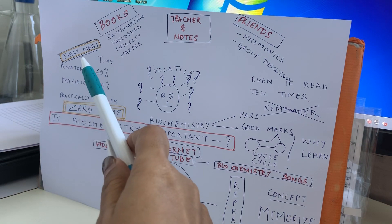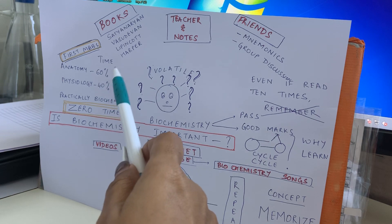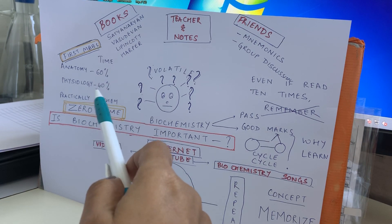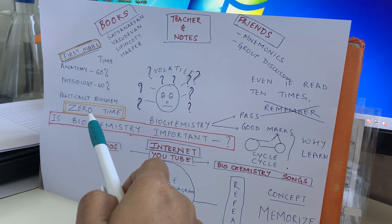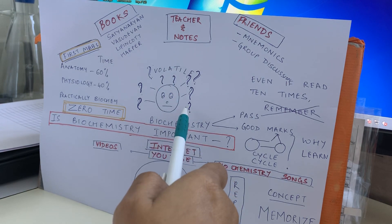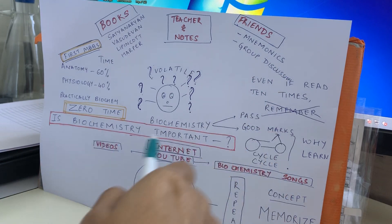It is a volatile subject, you have to keep on reading it. But the point is that in first MBBS, anatomy will take most of the time - 60% of the time goes into studying anatomy, the rest 40% of the time goes in physiology. So basically you're left with zero time for biochemistry, and because it is a volatile subject you do not remember it and you completely ignore biochemistry.